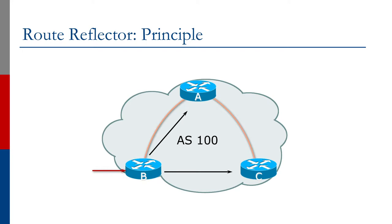IBGP works quite straightforwardly: a prefix comes from outside the AS, it lands on router B, and router B will send the prefix to router A and router C via the full mesh IBGP. Router A will not take the prefix it learns from B and pass it on to C — that's part of the IBGP specification. This is the example of a simple full mesh IBGP.